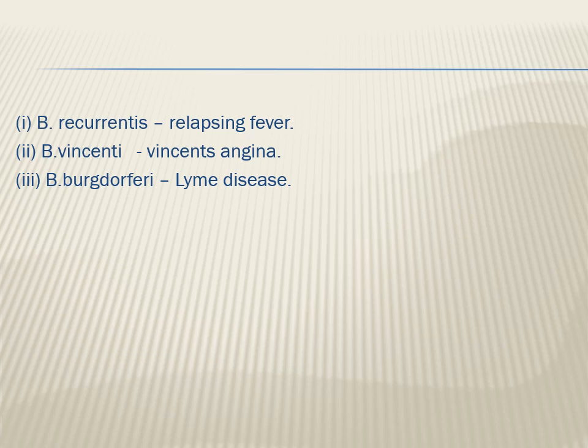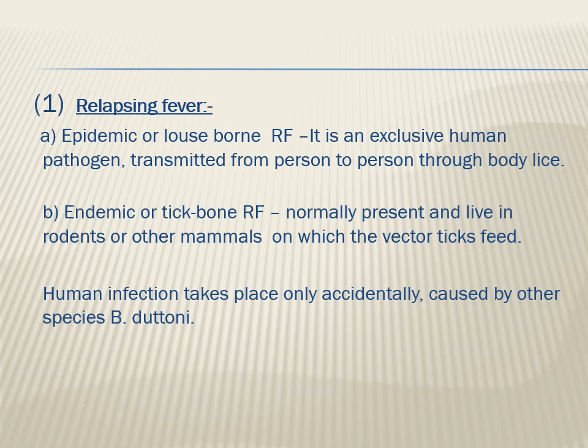Three Borrelia species are important in human infections: Borrelia recurrentis, Borrelia vincenti, and Borrelia burgdorferi. Borrelia recurrentis causes relapsing fever — the fever comes, subsides, and then returns. Borrelia vincenti does not cause bloodstream infection but causes oral infections. Borrelia burgdorferi causes Lyme disease.